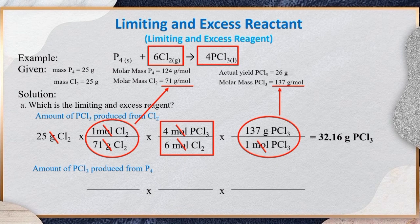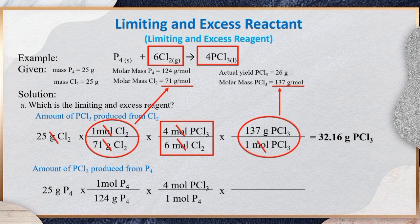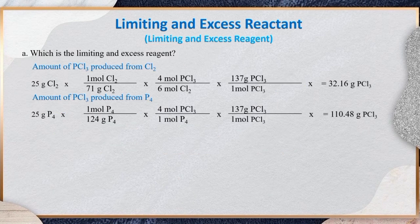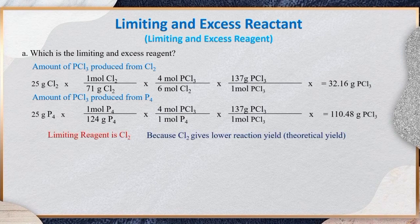In calculating the amount of PCl₃ using reactant P₄, we simply follow the same steps as we did using the reactant chlorine. Starting with 25 g of P₄, multiplied by 1 mol P₄ / 124 g P₄, multiplied by 4 mol PCl₃ / 1 mol P₄, multiplied by 137 g PCl₃ / 1 mol PCl₃, gives you 110.48 g PCl₃, after cancelling all unwanted units. Therefore, the limiting reagent is Cl₂ because Cl₂ gives the lower reaction yield, and the excess reagent is P₄.